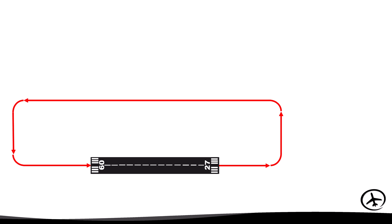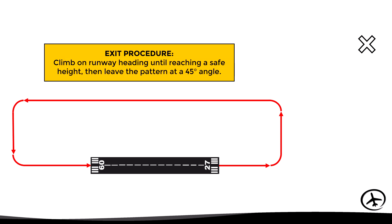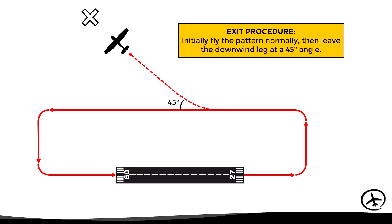For example, if an aircraft is about to take off from runway 09 and wants to proceed to a destination in one direction, the procedure could be to climb on runway heading until reaching a safe height and then leave the crosswind leg at a 45-degree angle. If the aircraft wants to proceed in another direction, the procedure could be to fly the pattern normally and then leave the downwind leg at a 45-degree angle.